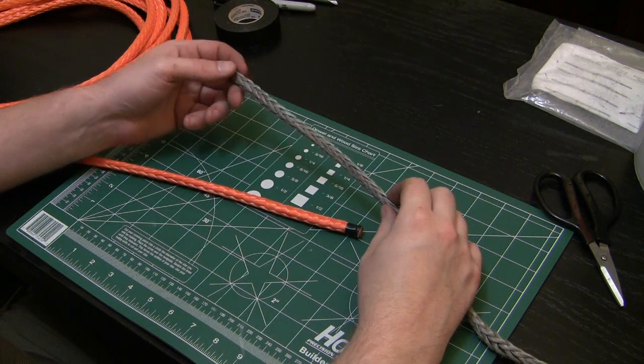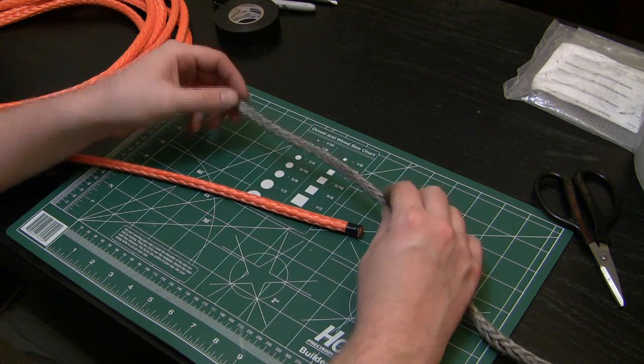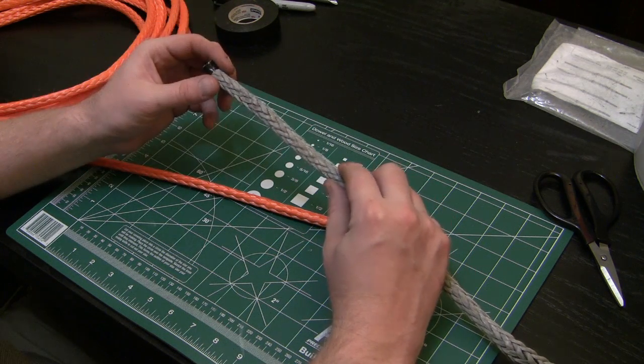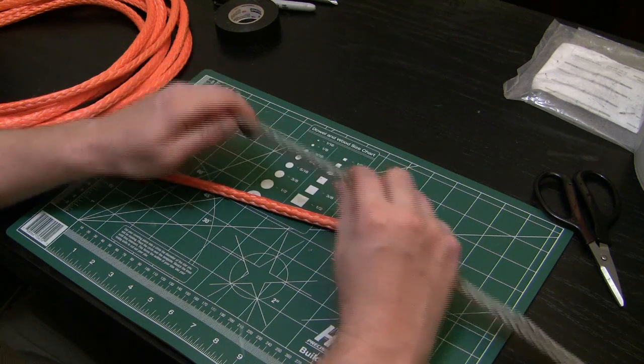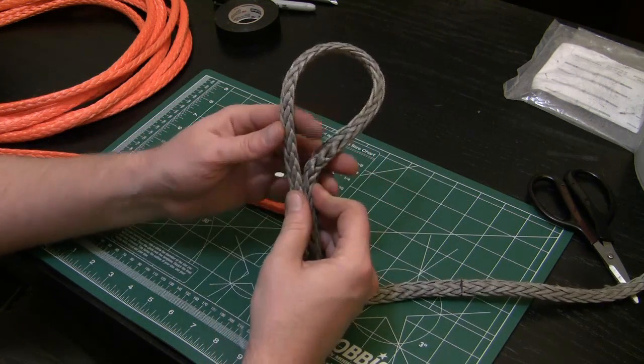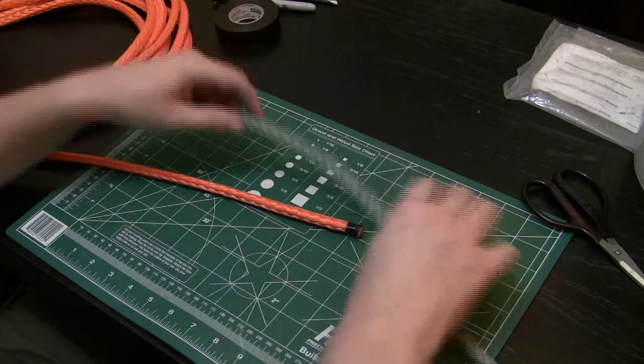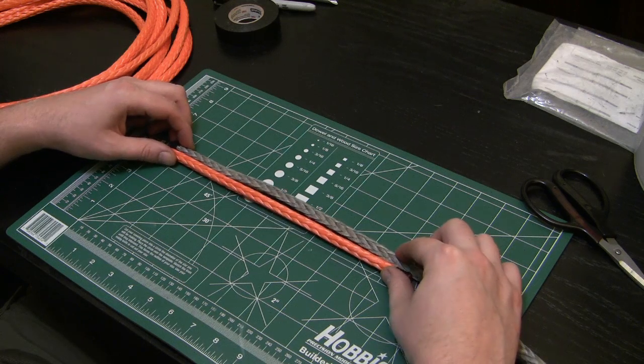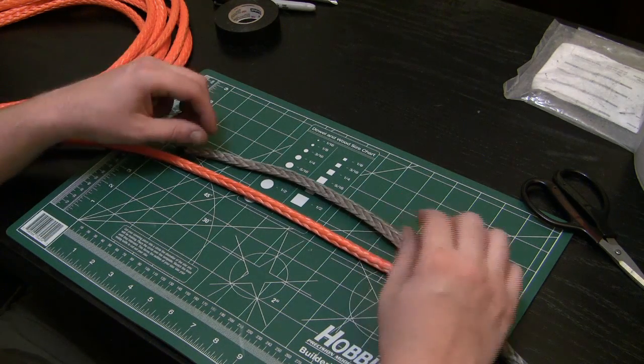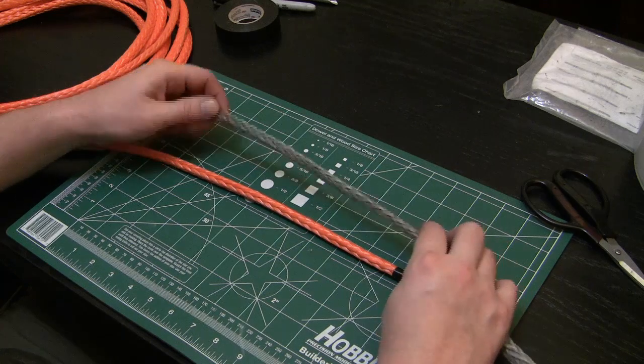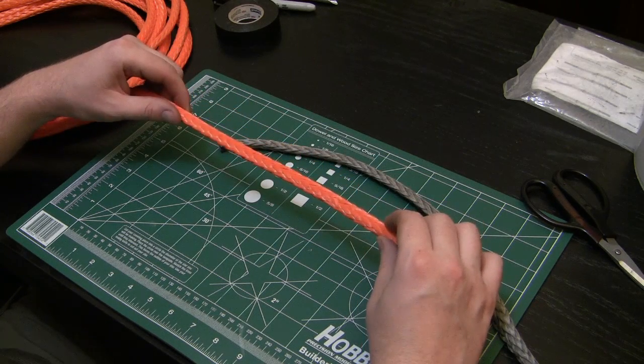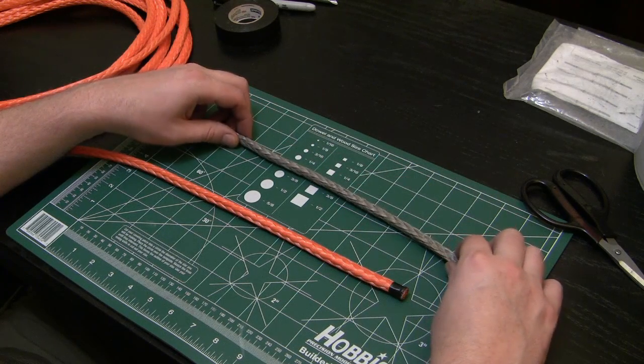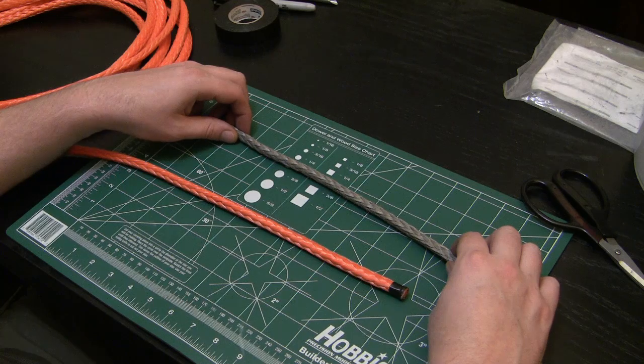For this splice we're going to be doing the end-for-end splice. This is a splice that you would use if your line breaks in the middle, not right near the end where you would do an eye splice and form your loop with a thimble. Basically what we're doing is we're going to join these two ropes together. We're going to do the same thing twice, so I'm just going to demonstrate it on this orange rope, and when you're finished you'll need to do the same thing to your other rope.